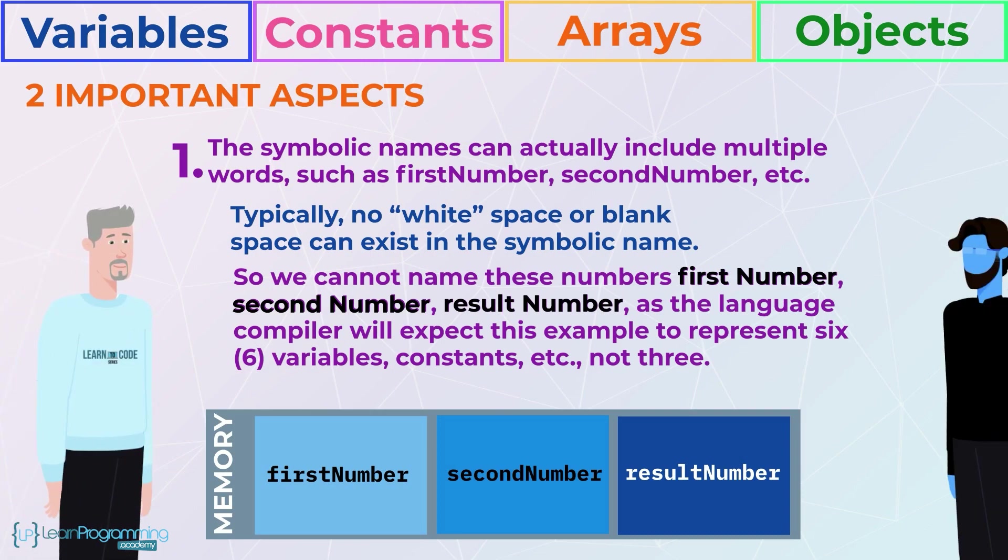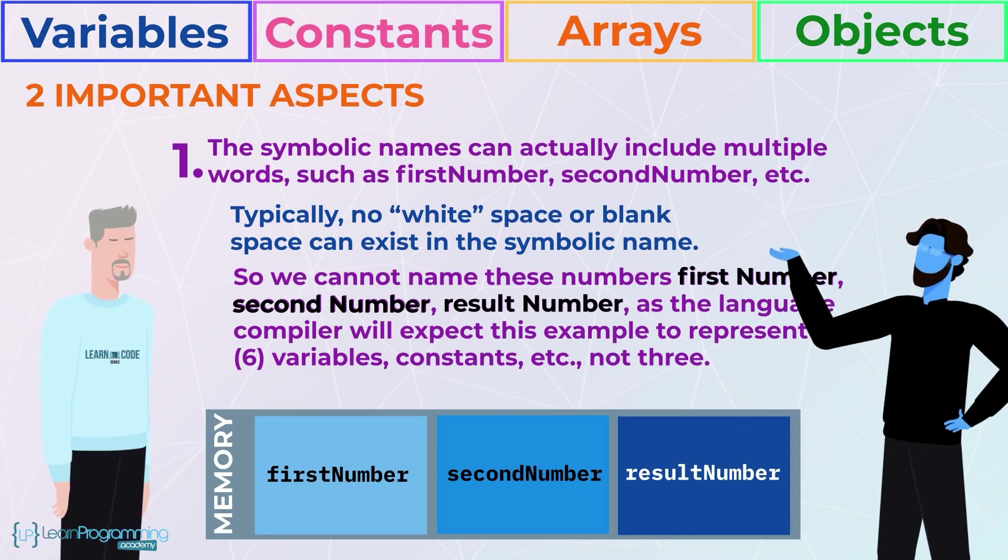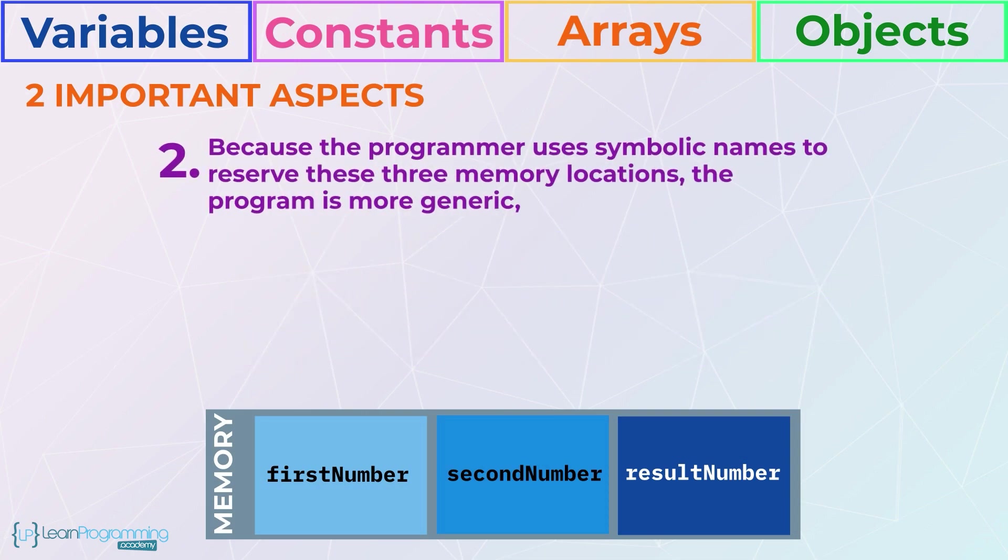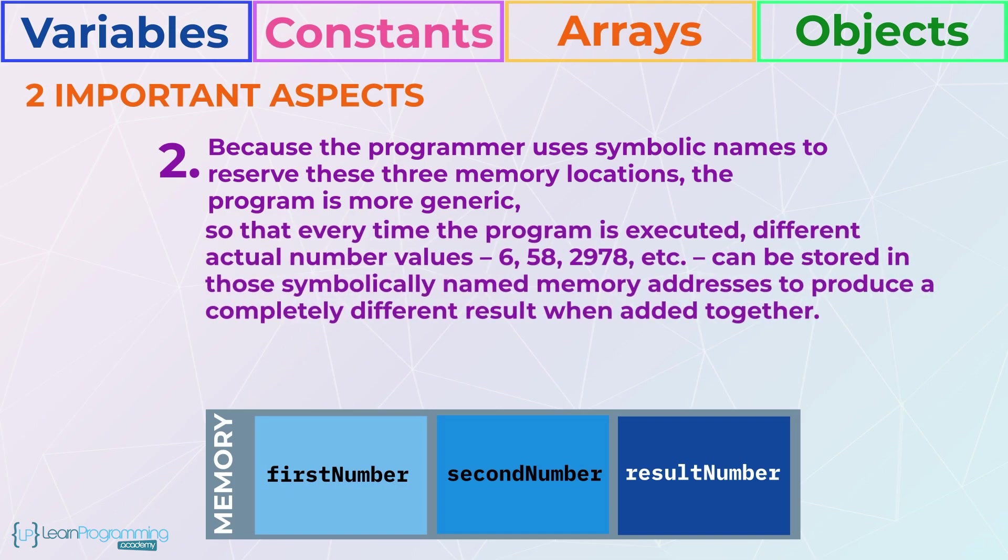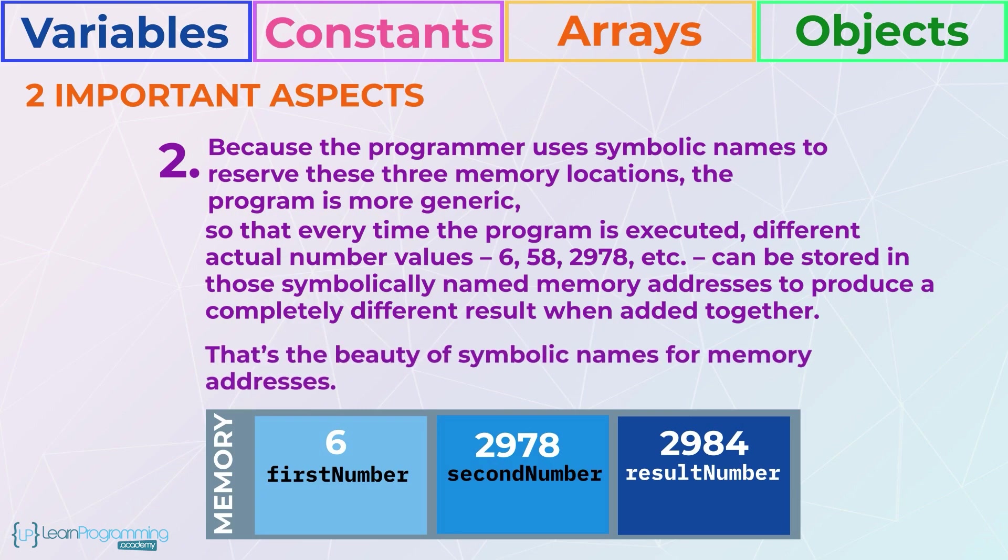The second aspect to notice is that because the programmer uses symbolic names to reserve these three memory locations, the program is more generic so that every time the program is executed different actual number values 6, 58, 2978 etc. can be stored in those symbolically named memory addresses to produce a completely different result when added together. That's the beauty of symbolic names for memory addresses.